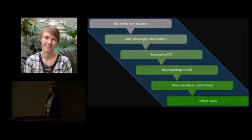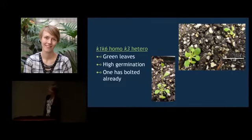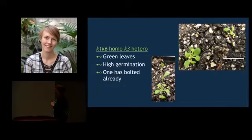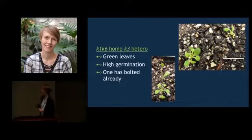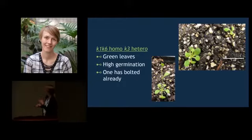So what did we find? The plants that are homozygous for K1 and K6 and heterozygous for K3 have shown green leaves and high germination. One of them actually bolted this week — you can see that right here. These plants are doing pretty well; they've been on soil for about two weeks and are surviving just fine, looking comparable to wild type. It remains to be seen if they can viably reproduce, but that is the hope.